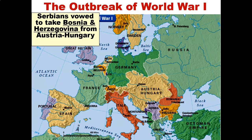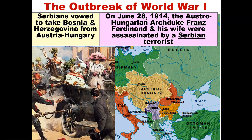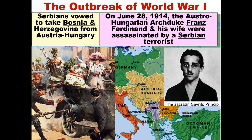The outbreak of World War One: Serbians vowed to take Bosnia and Herzegovina from Austria-Hungary, already creating tensions between both nations. On June 28th, 1914, the Austro-Hungarian Archduke Franz Ferdinand and his wife were assassinated by a Serbian terrorist. This obviously led to a conflict the world had never seen before. Here is the assassin — the terrorist that killed Franz Ferdinand and his wife — whose image you see to the right side of the presentation.